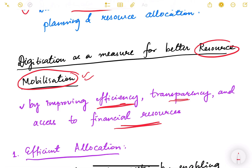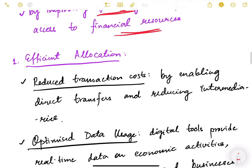Let us look at this in an elaborate way. The first benefit is efficient allocation of resources. This happens because of reduced transaction costs — by enabling direct transfers and reducing intermediaries, the government can redistribute resources more efficiently with less leakages and lower transaction costs. This allows resources to flow more efficiently across different sectors.